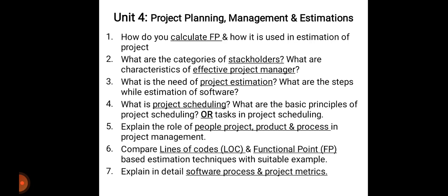Unit 4 is a most important unit: project planning, management and estimations — more questions will be asked from this unit. First: how do you calculate FP (function points) and how it is used in estimation of a project — mention calculations with example. Then categories of stakeholders and characteristics of an effective project manager. Also the need of project estimation and steps of estimation of software, generally asked for six to eight marks.